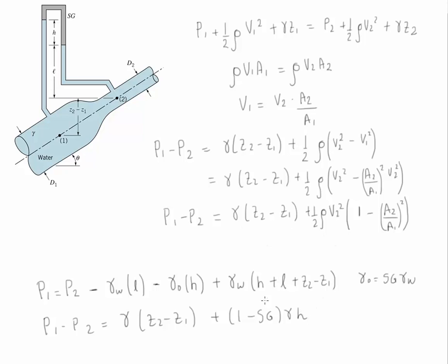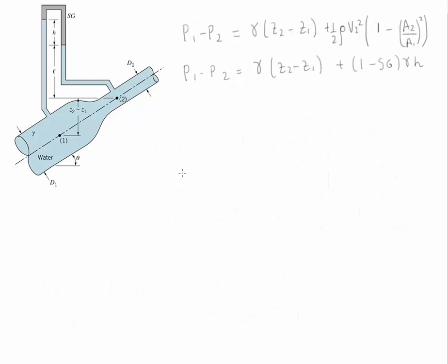Notice that the gamma used in both equations is the gamma of water. Now that we have two equations for P1 minus P2 — one using hydrostatic distribution and the other using Bernoulli's — these two expressions must be equal. Setting them equal: gamma (Z2 minus Z1) plus one-half rho V2 squared times (1 minus (A2/A1) squared) equals gamma (Z2 minus Z1) plus (1 minus SG) times gamma times H.